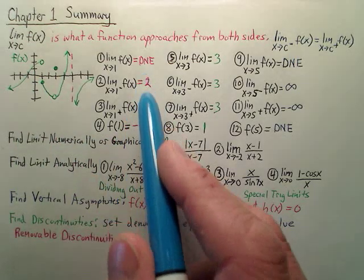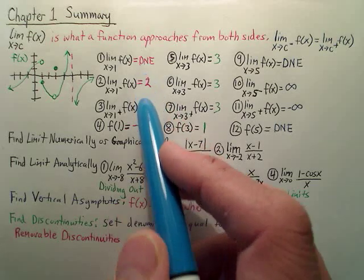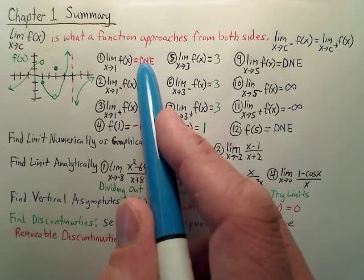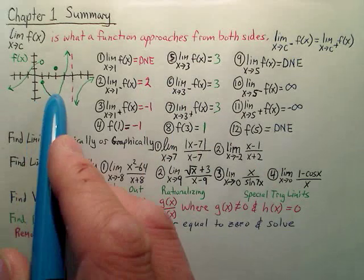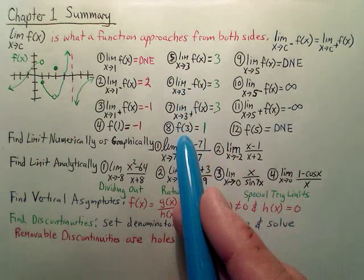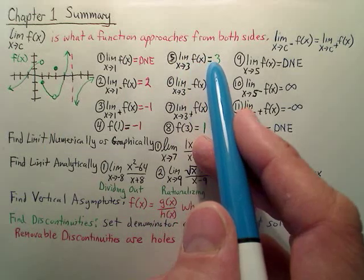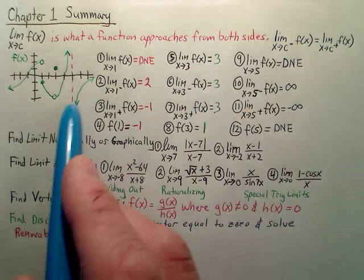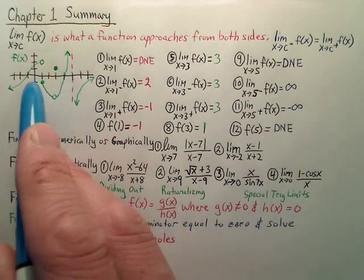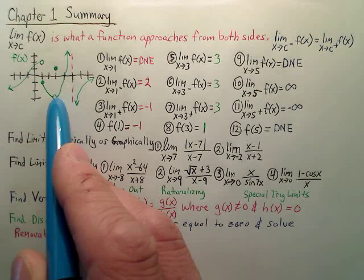So the limits must agree on either side for the limit to be existing. So we're looking now at the limit as x approaches 3. So as x approaches 3, the limit does exist because it's 3.